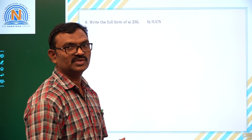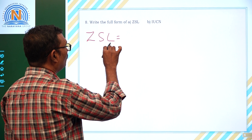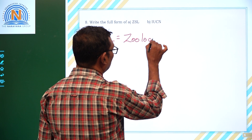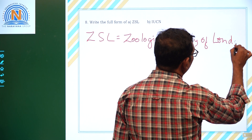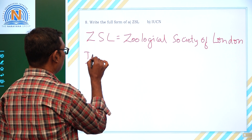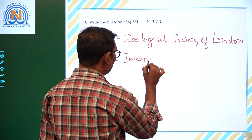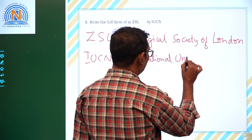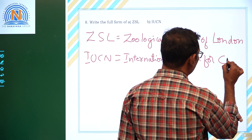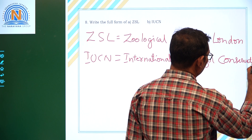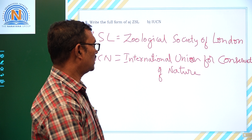The full form of ZSL and IUCN. ZSL means Zoological Society of London. IUCN means International Union for Conservation of Nature — I for International, U for Union, C for Conservation, N for Nature.